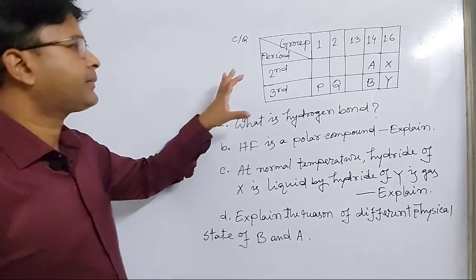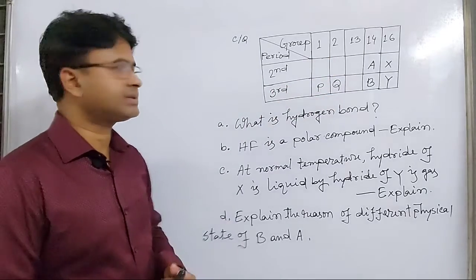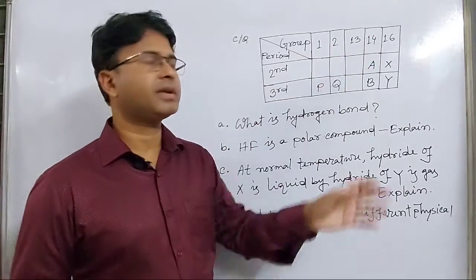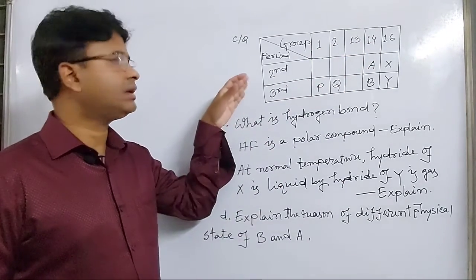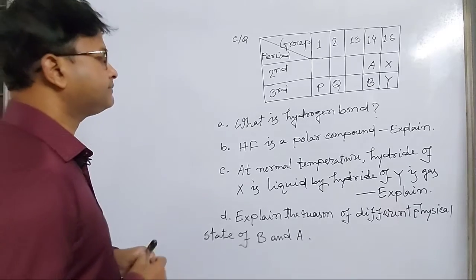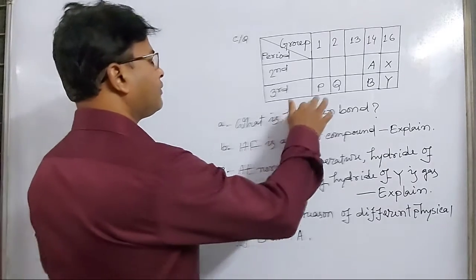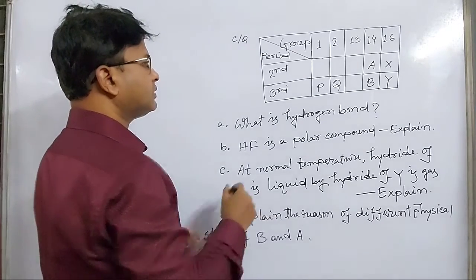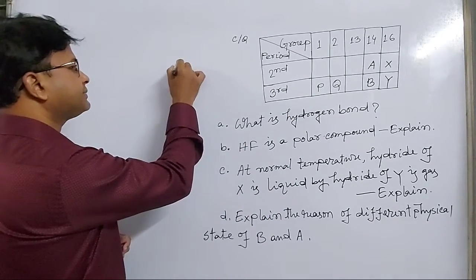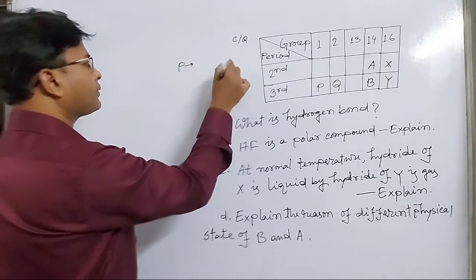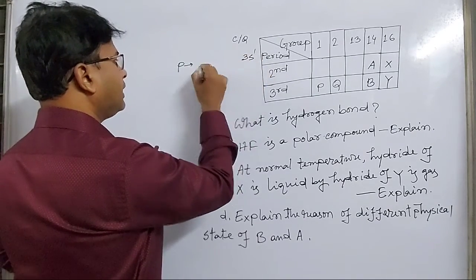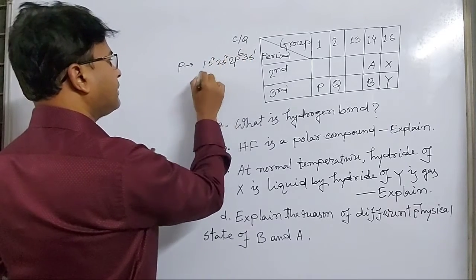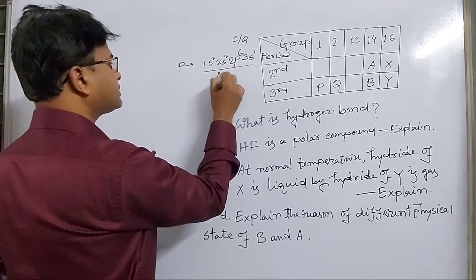Here, a part of the periodic table is given as a stem and the group numbers are 1 to 13, 14 and 16. The period numbers are 2nd and 3rd. In the first group and third period, P is present. So P indicates sodium — its electron configuration is 1s2, 2s2, 2p6, 3s1, giving a total of 11 electrons.